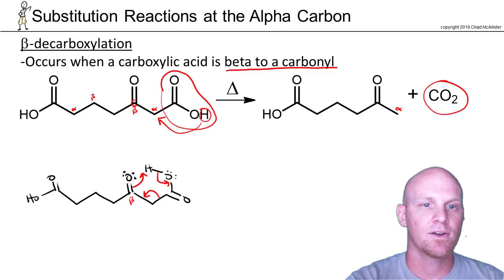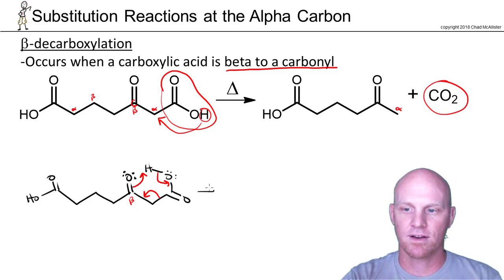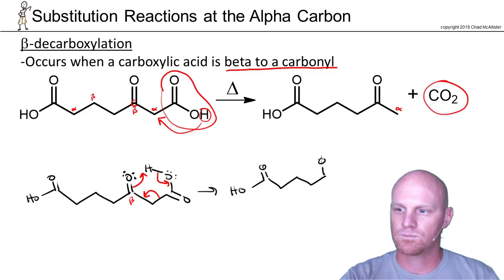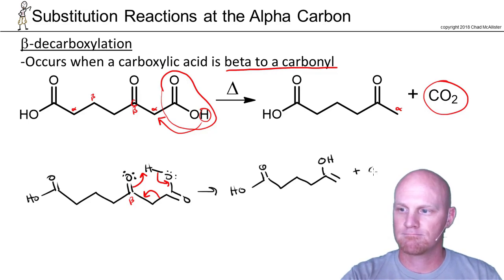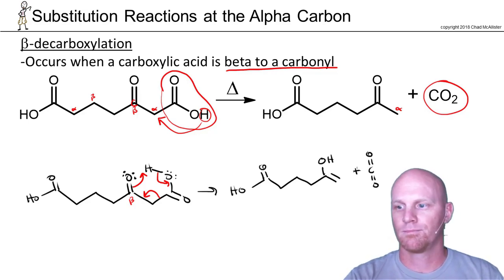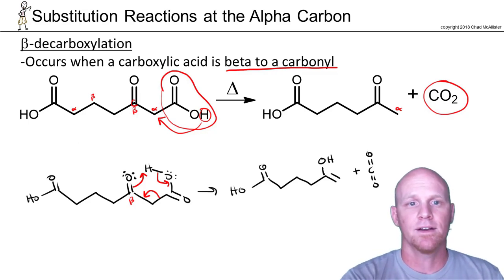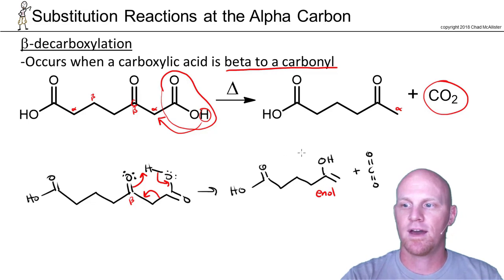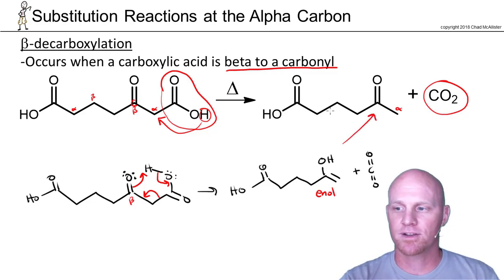Looking at what we've got in the process, we can see that this is an enol, and that will tautomerize back to being a ketone, which is why you end up with that final product.